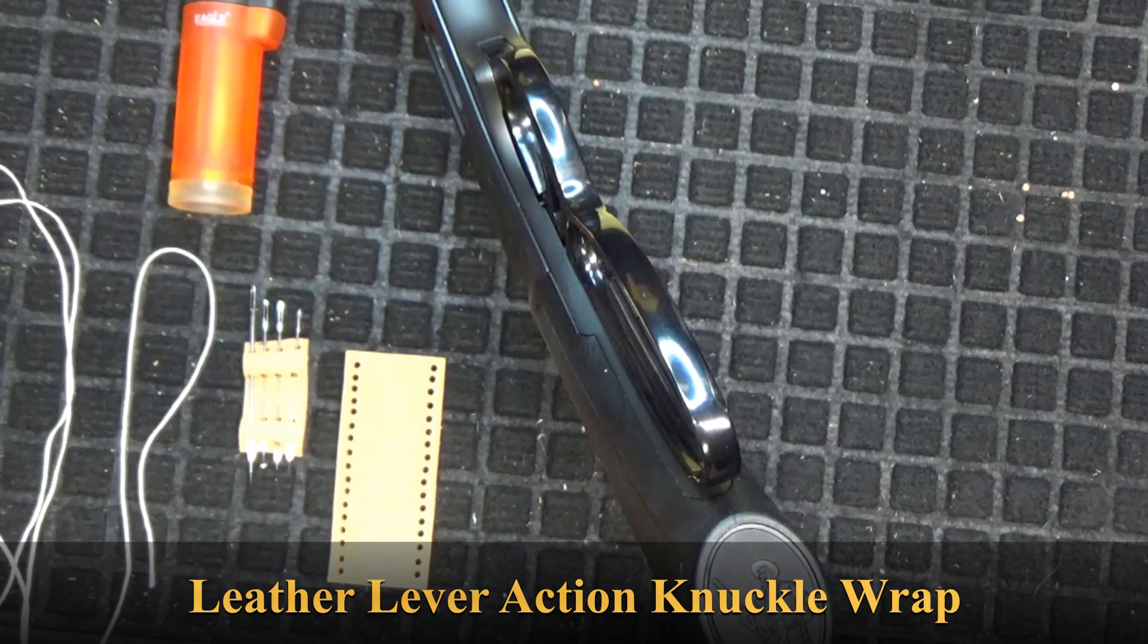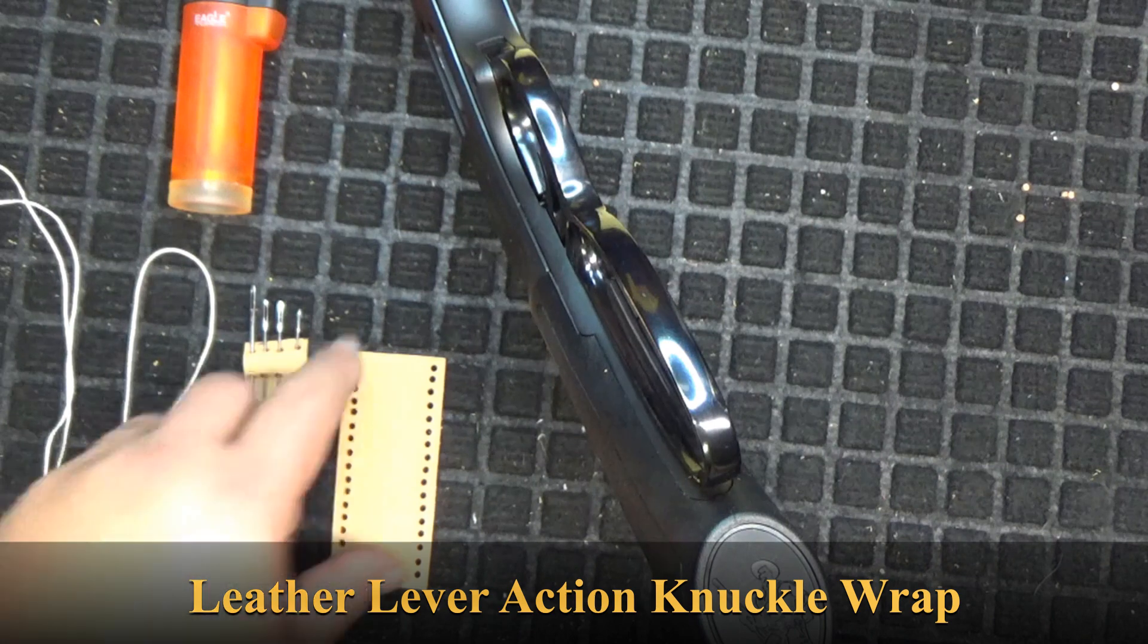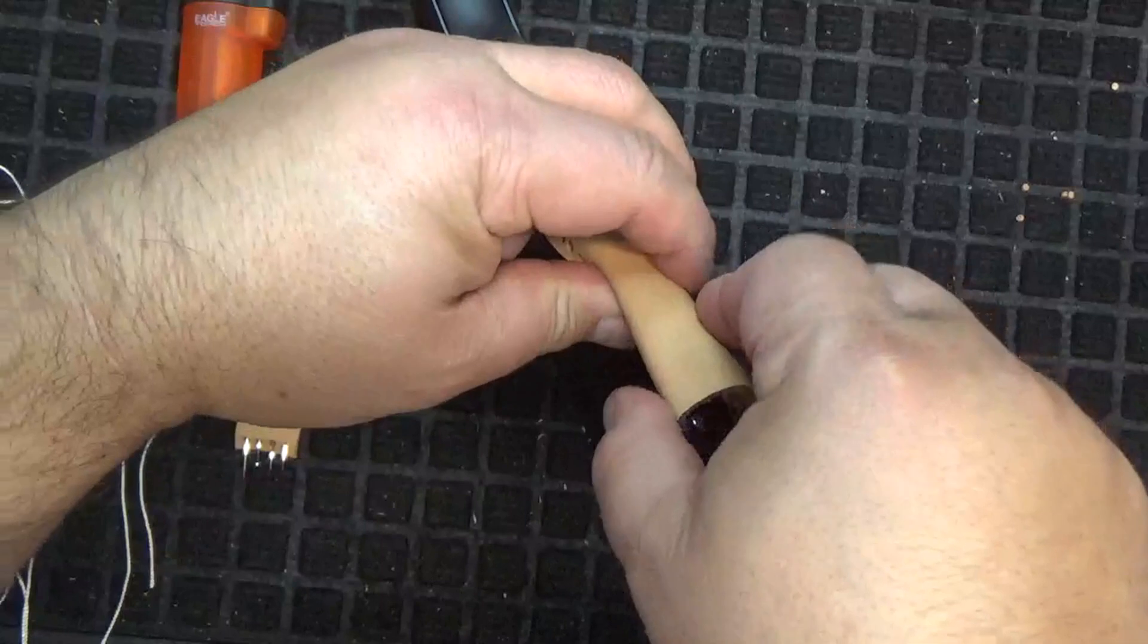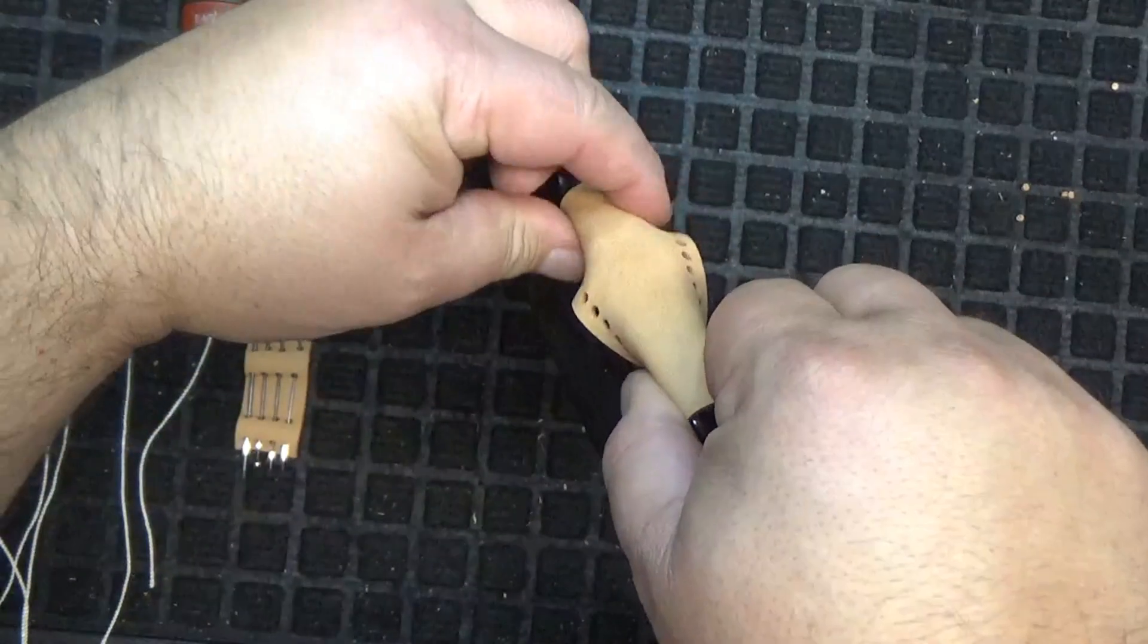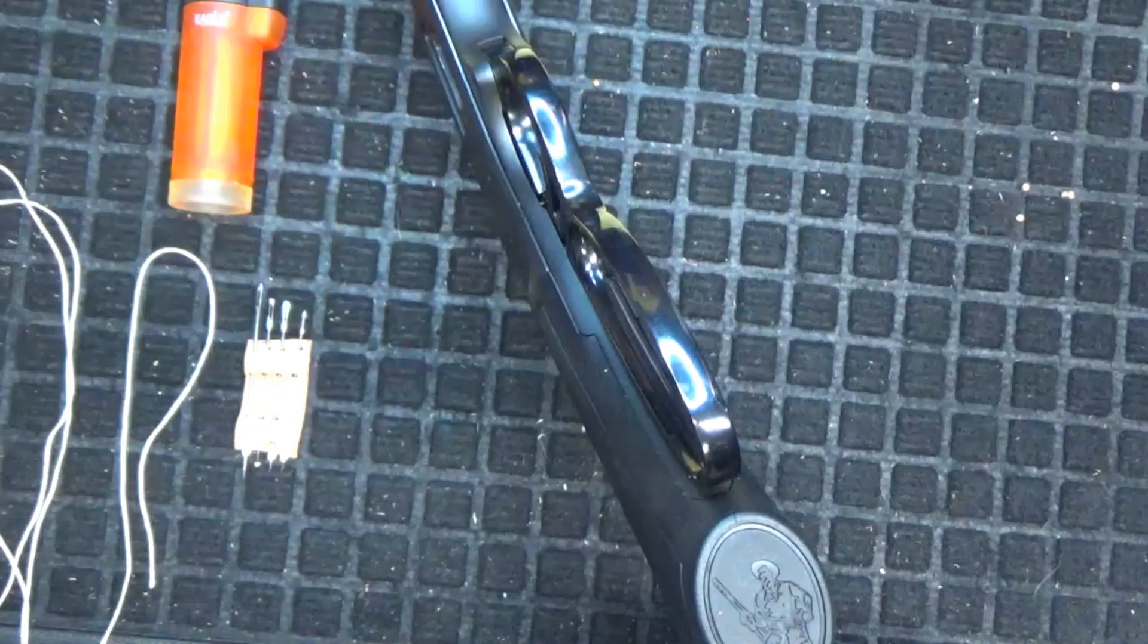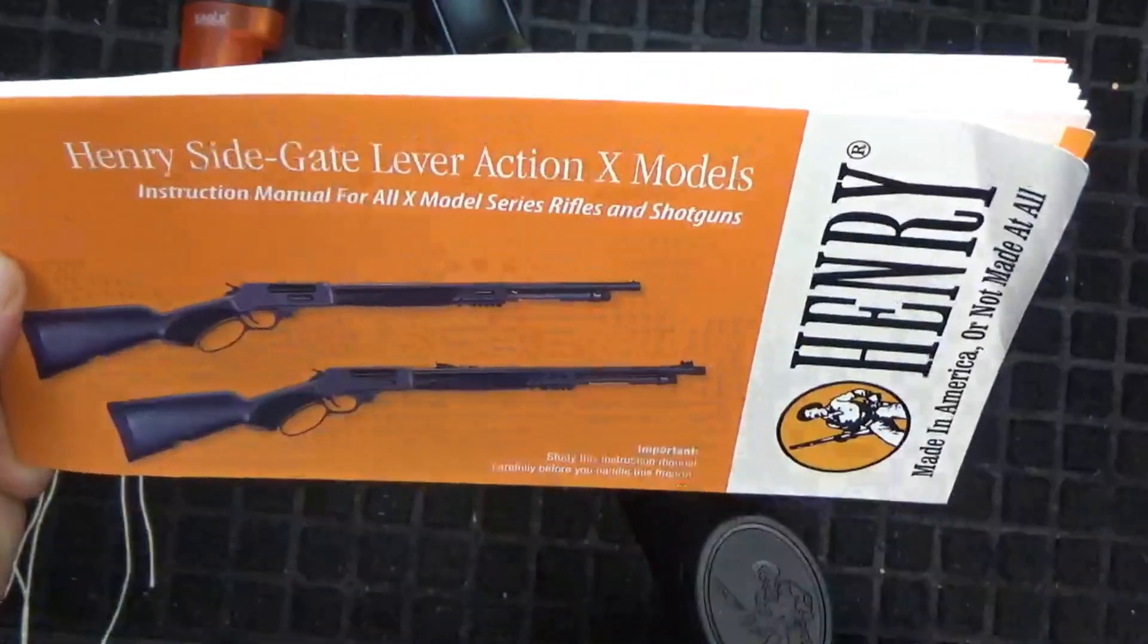Hi guys. Today I'm going to be showing you how to make a lever action knuckle protector for my Henry Model X rifle.